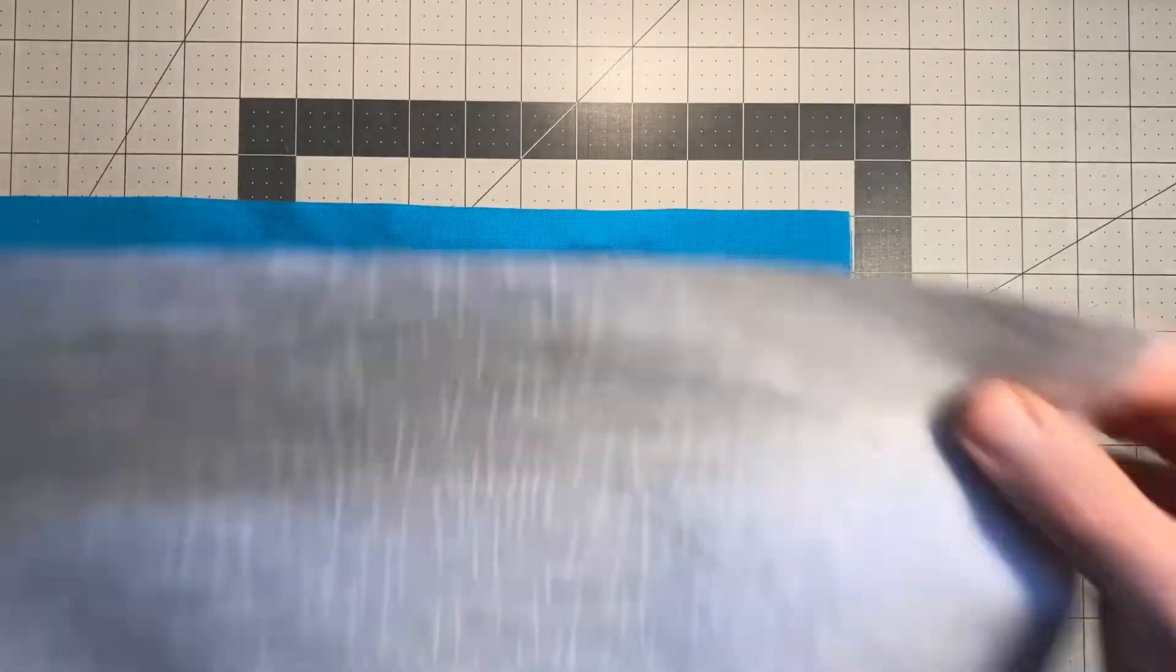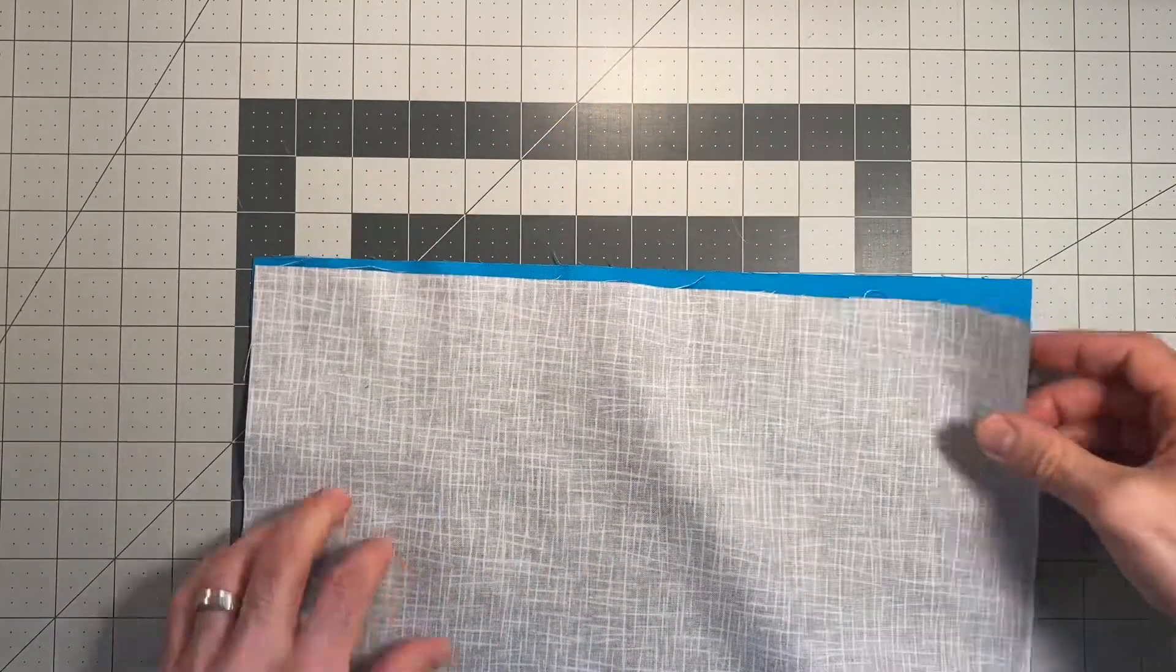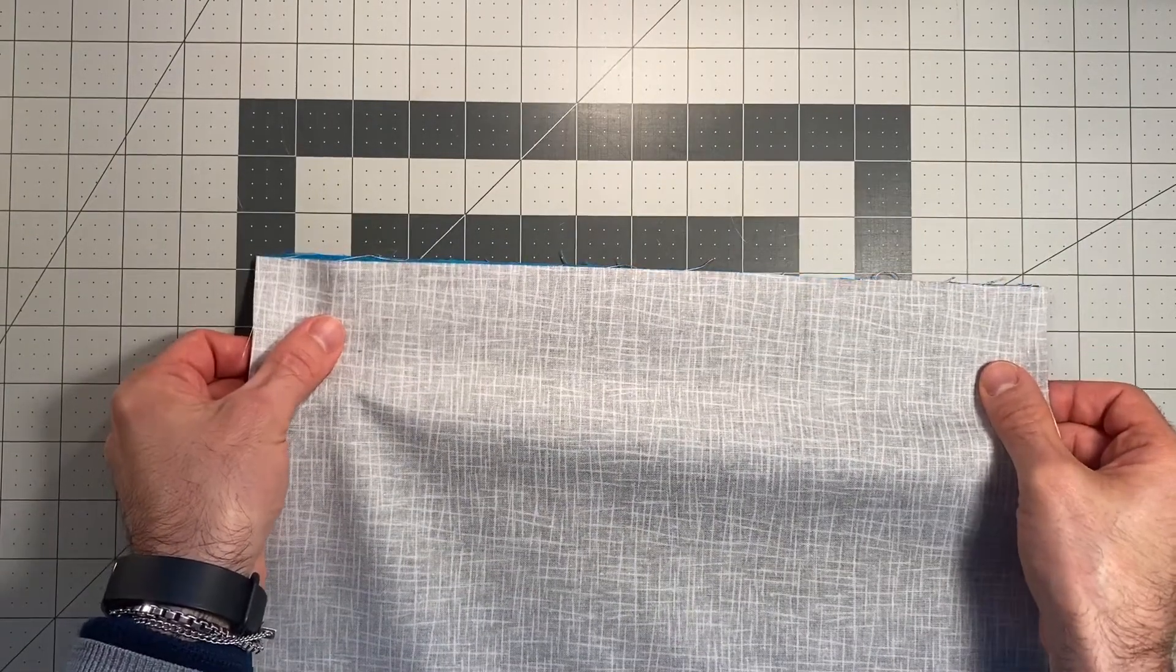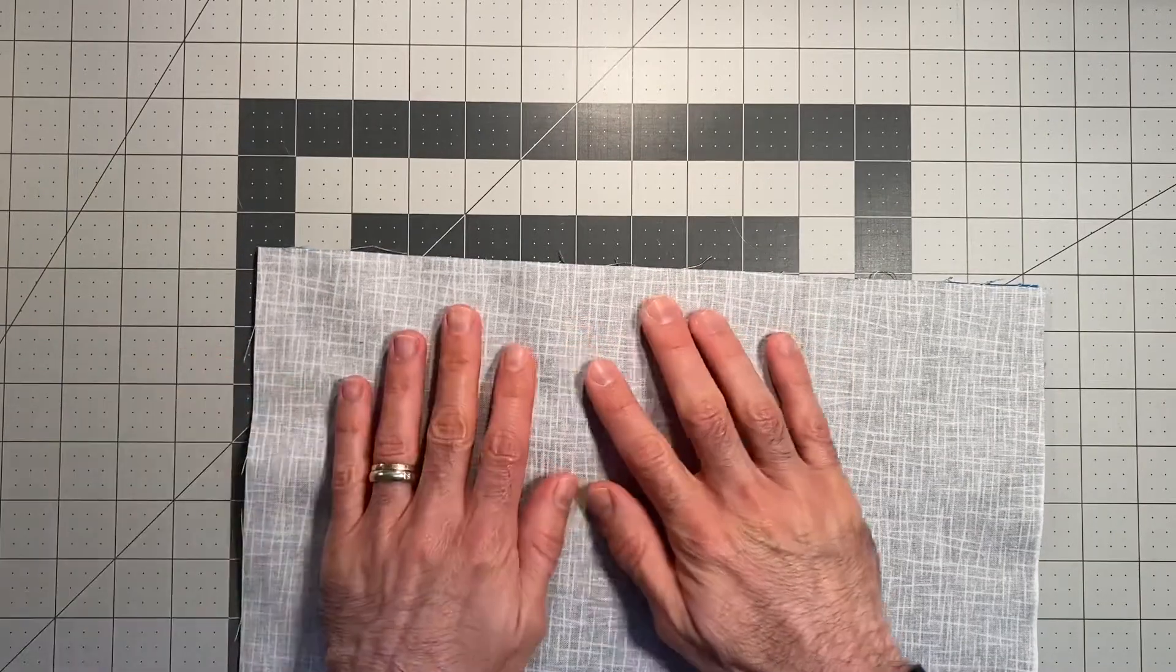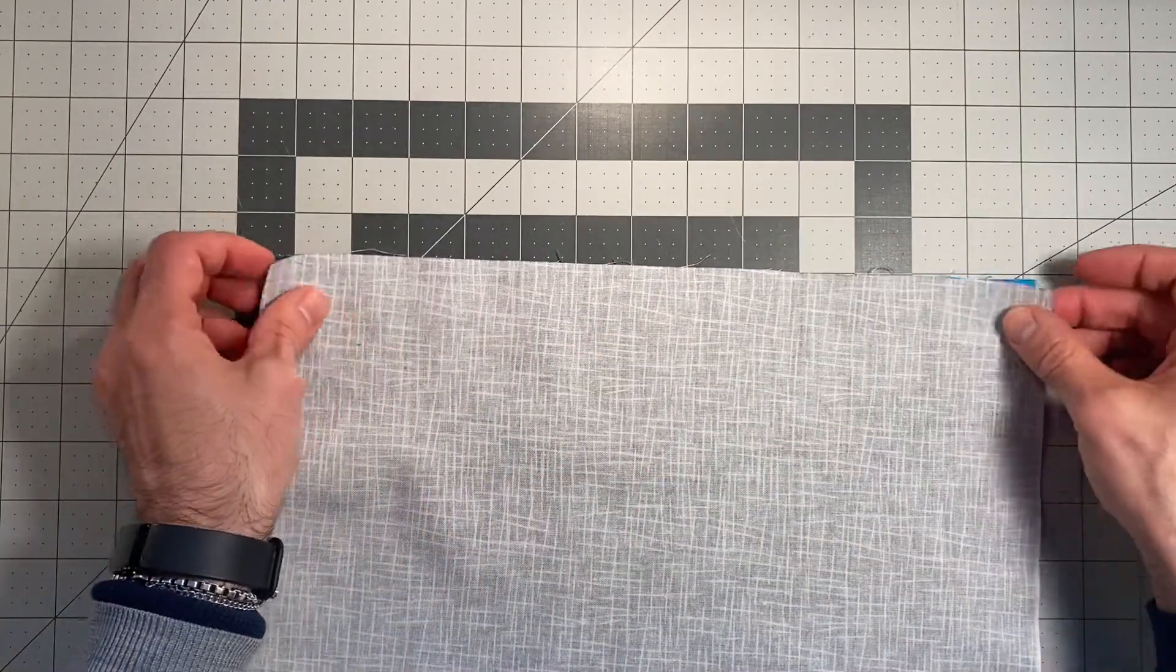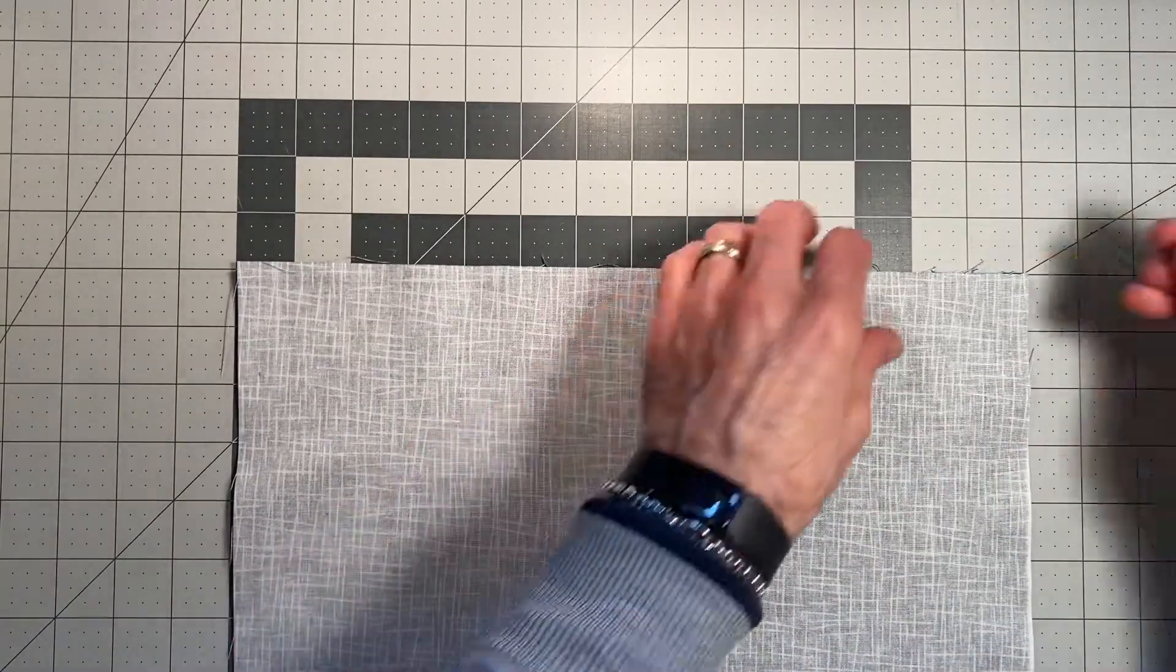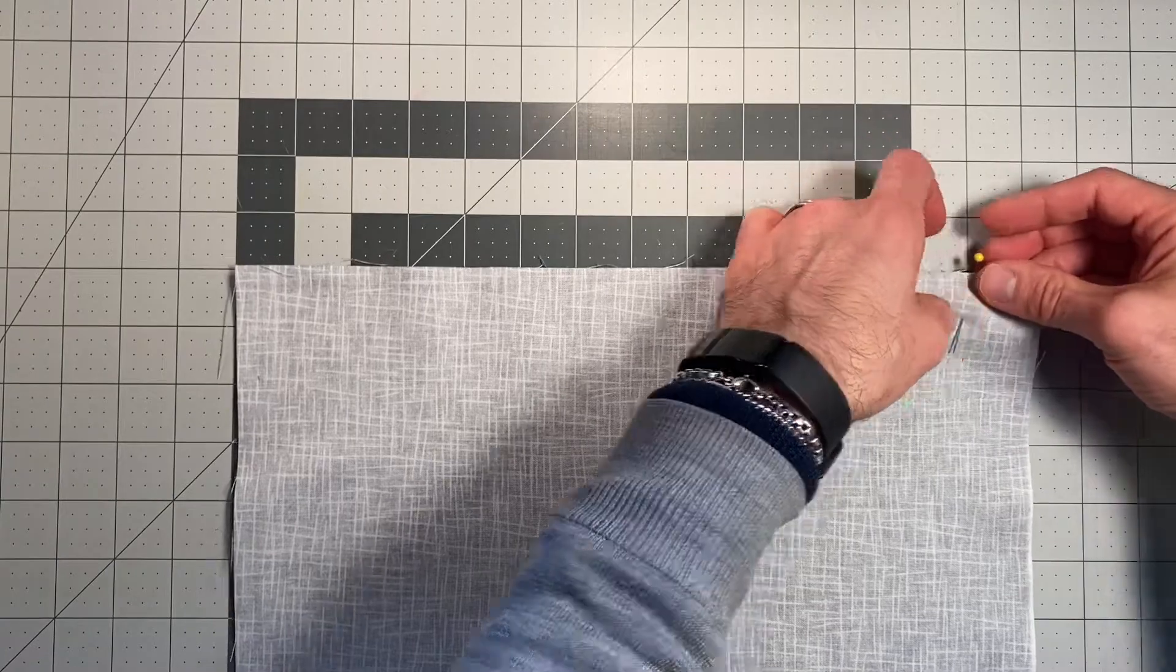My first step is to flip the charcoal piece so it lays right sides together on top of the teal piece. If the teal piece fabric had a print, I would want the printed sides to be touching each other. Line up the raw edges of the 14 inch side of both fabrics, making sure the corners match up. Pin these in place with your pins perpendicular to the fabric and pin heads off the edge.